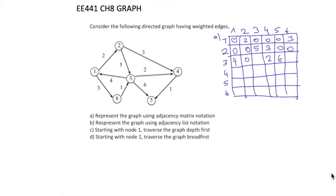All others are 0. From node 4, there is only a connection to node 5 having value 1. All others are 0. For node 5, there is no connection going out of node 5, so all values here are 0. For the last node 6, there is a connection from 6 to 3 with weight 1, and all others are 0.